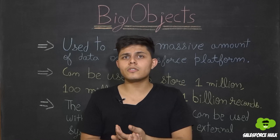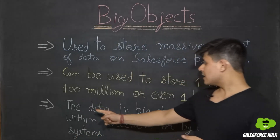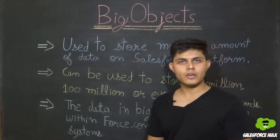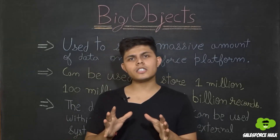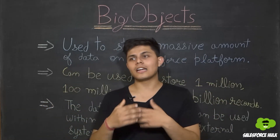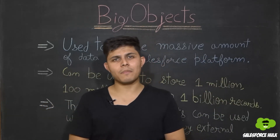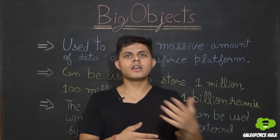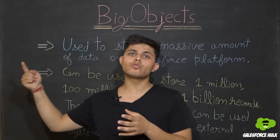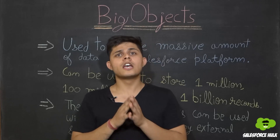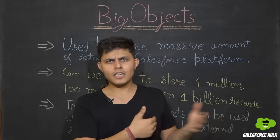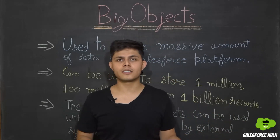This data in big objects can be used within force.com or by external systems. The records present in big objects can be used within force.com — in Apex or whatever processes you want — or if you want external applications to use that data, you can do that with a set of APIs available to access records in big objects.